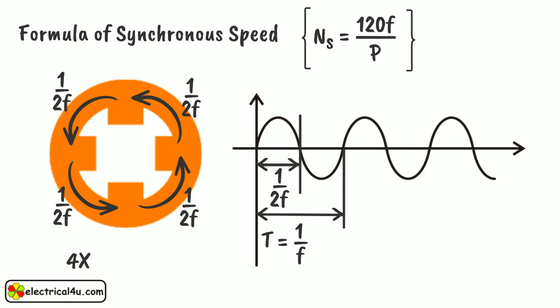So it takes 4 times 1 by 2f, or 4 by 2f seconds to complete one physical rotation of 360 degrees.